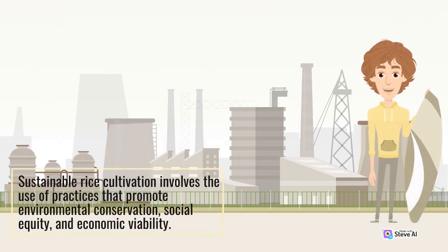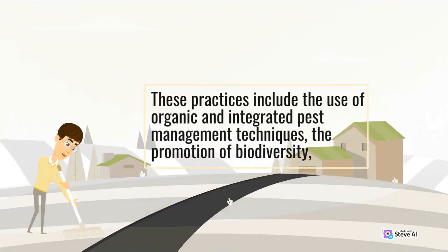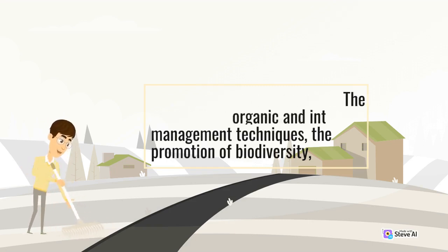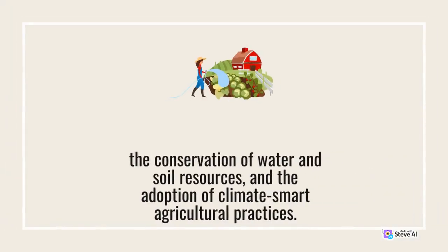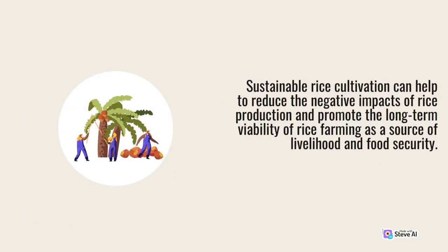Sustainable rice cultivation involves the use of practices that promote environmental conservation, social equity, and economic viability. These practices include the use of organic and integrated pest management techniques, the promotion of biodiversity, the conservation of water and soil resources, and the adoption of climate-smart agricultural practices. Sustainable rice cultivation can help to reduce the negative impacts of rice production and promote the long-term viability of rice farming as a source of livelihood and food security.